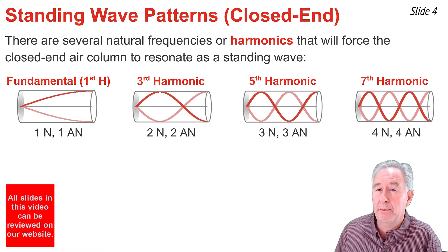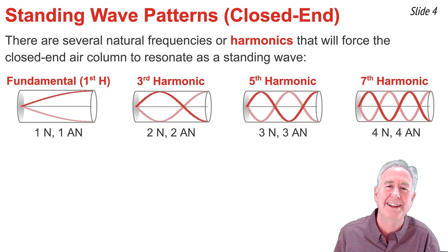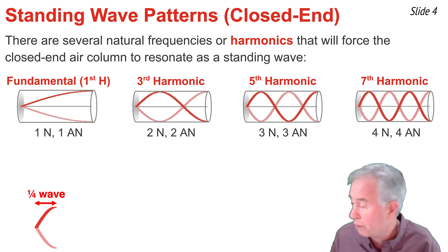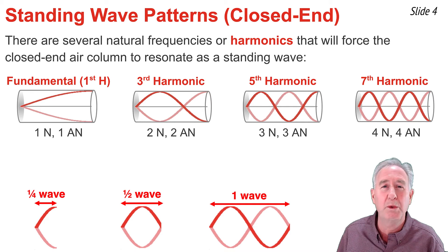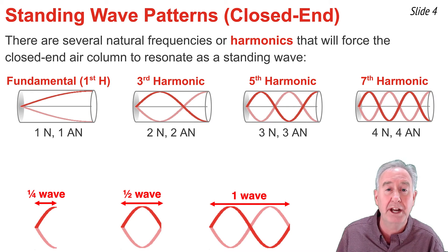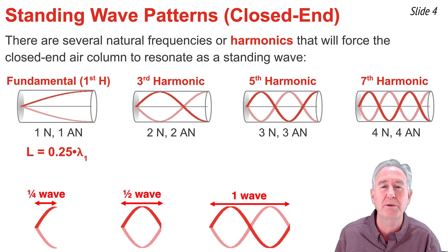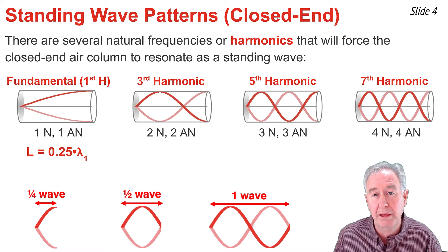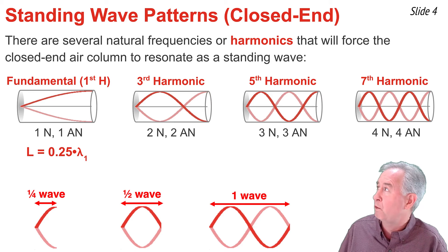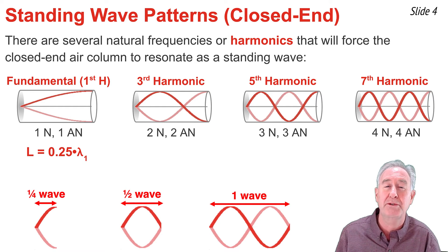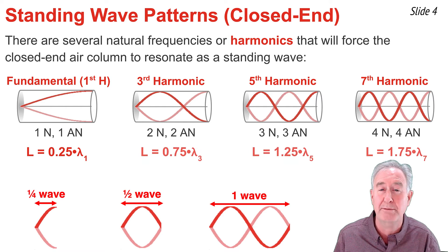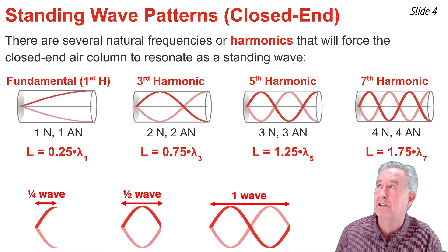I can inspect each of these standing wave patterns and write an algebraic statement relating the length of the air column to the wavelength of the waves that force it to resonate. This requires understanding that a certain portion represents a quarter of a wavelength, another a half wavelength, and another a full wavelength. Inspecting the first harmonic's pattern, I notice there's a quarter of a wavelength, so I write L = (1/4)λ. For the third harmonic, there is one half plus one quarter of a wavelength, which sums to three quarters, so L = (3/4)λ. Repeating the process for the fifth and seventh harmonic gives L = (5/4)λ and L = (7/4)λ.